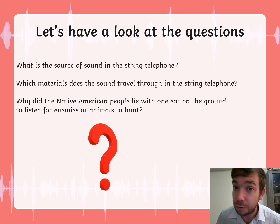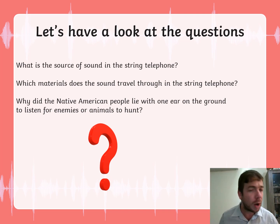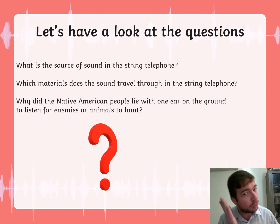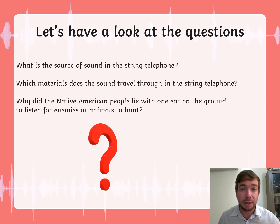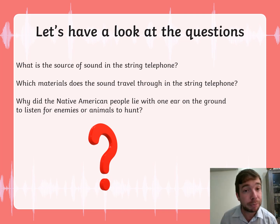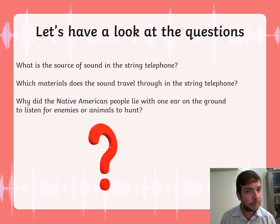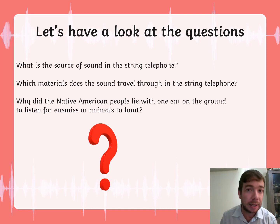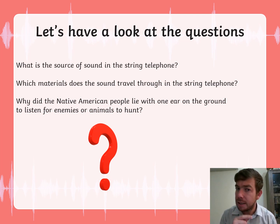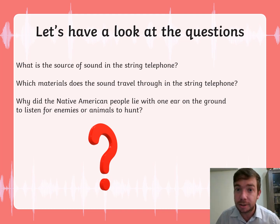Question three is interesting and requires an experiment at home. Why did Native American people lie with one ear on the ground to listen for enemies or animals to hunt? Try this: ask your mom or dad to stand on one side of the dining table and tap on it. Did you hear it? Now repeat the same tap, but lay with your ear on the table. Did it sound louder or quieter? That's your clue to answering the question.